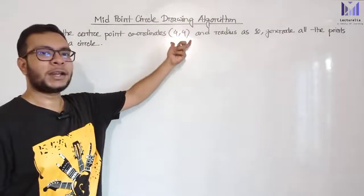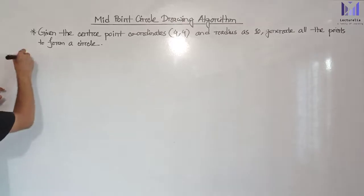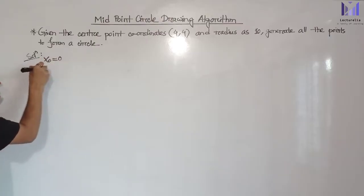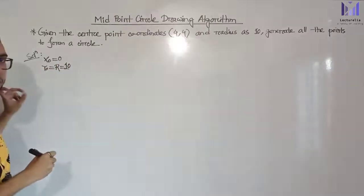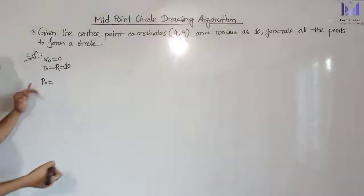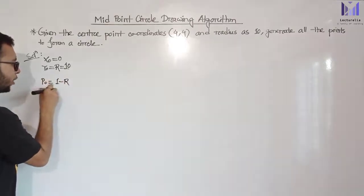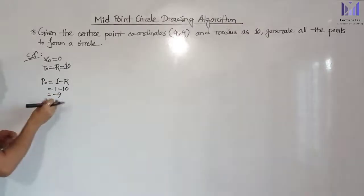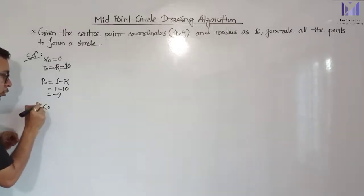We are given the center coordinate (0, 0) and the radius is 10. The initial decision parameter p0 = 1 minus r = 1 minus 10 = minus 9. We check the initial decision parameter p_not. If p_not is less than zero, we go to case 1.